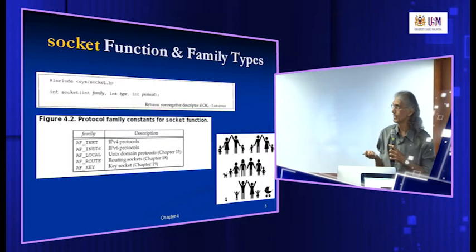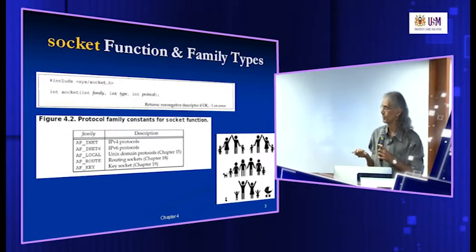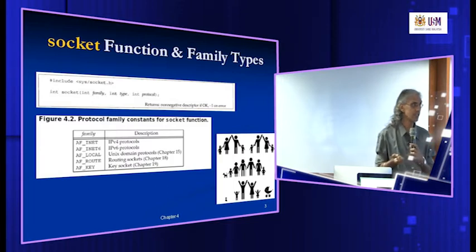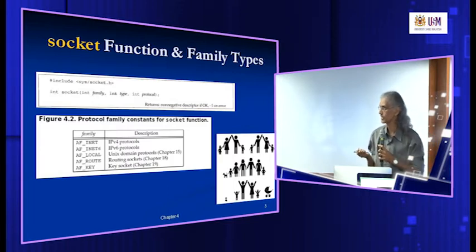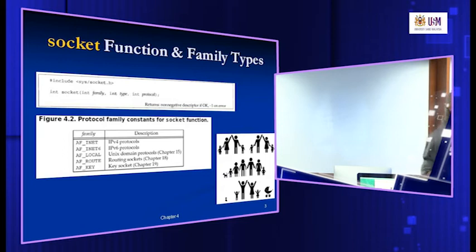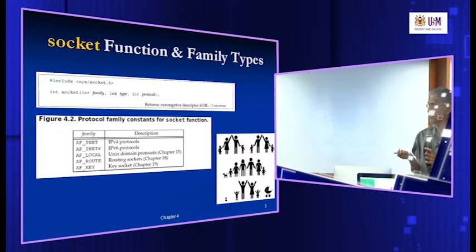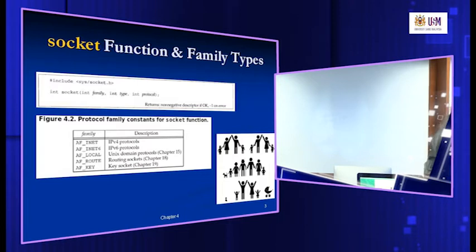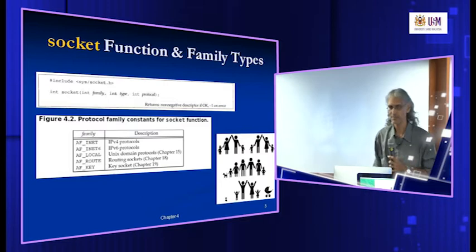The first parameter is the family. There are four or five types. We have used the first two: AF_INET and AF_INET6. When you create a socket, you need to indicate what type — whether it's IPv4 or IPv6. There are a few more types — Unix domain protocols, routing sockets, key sockets — which are quite advanced and not covered in this class. We're only going to use the first two.